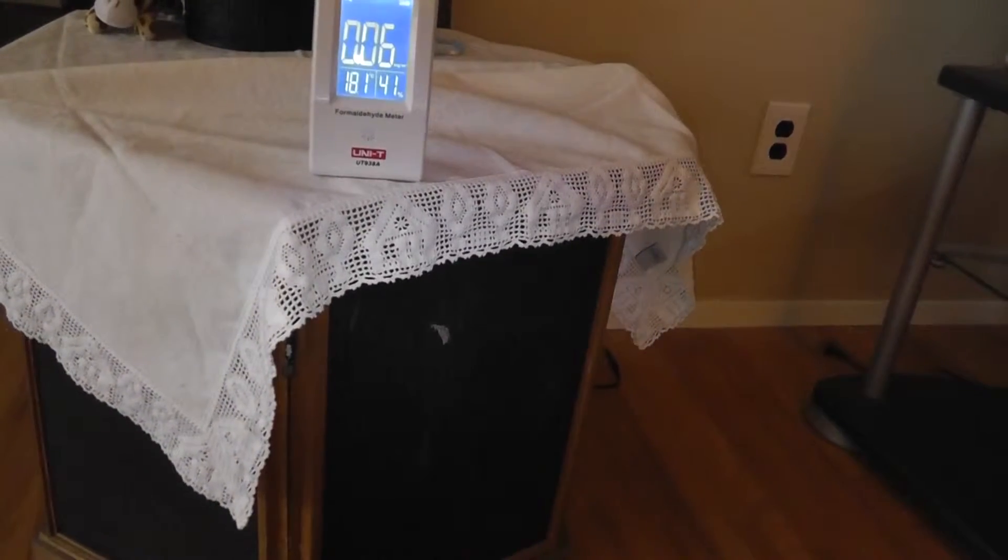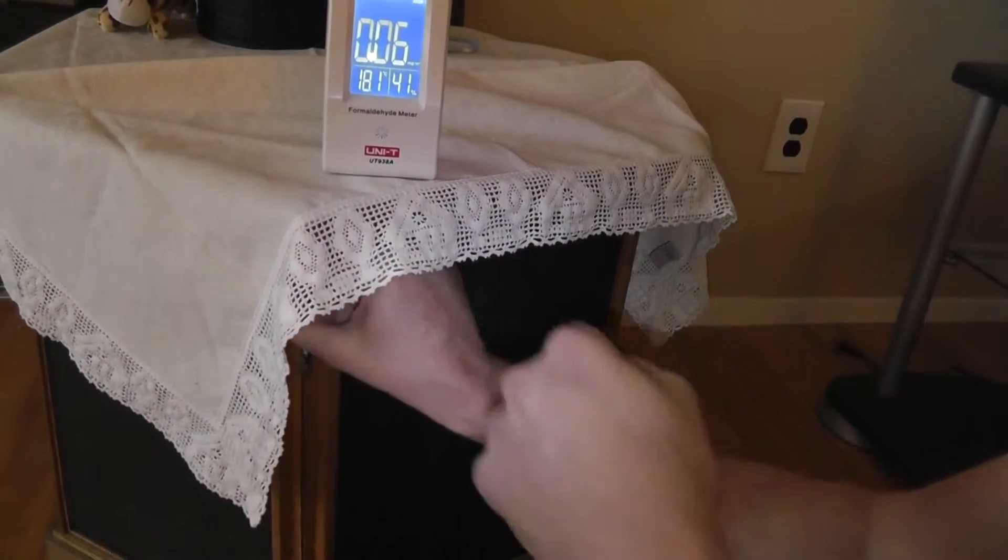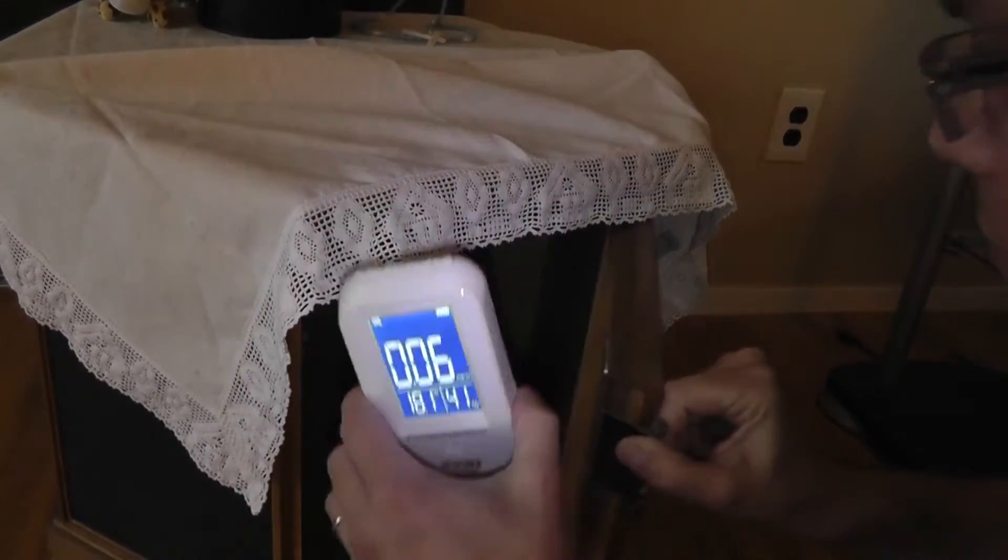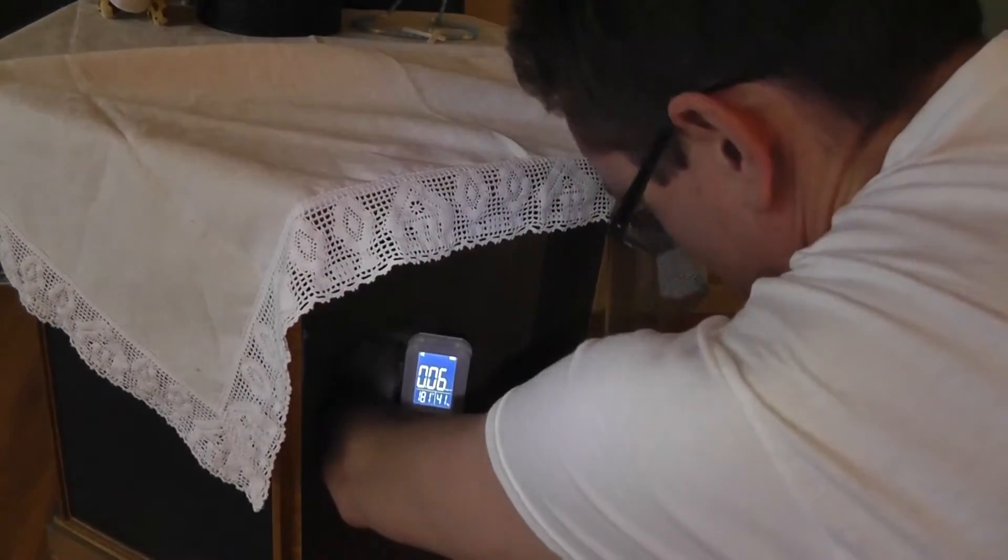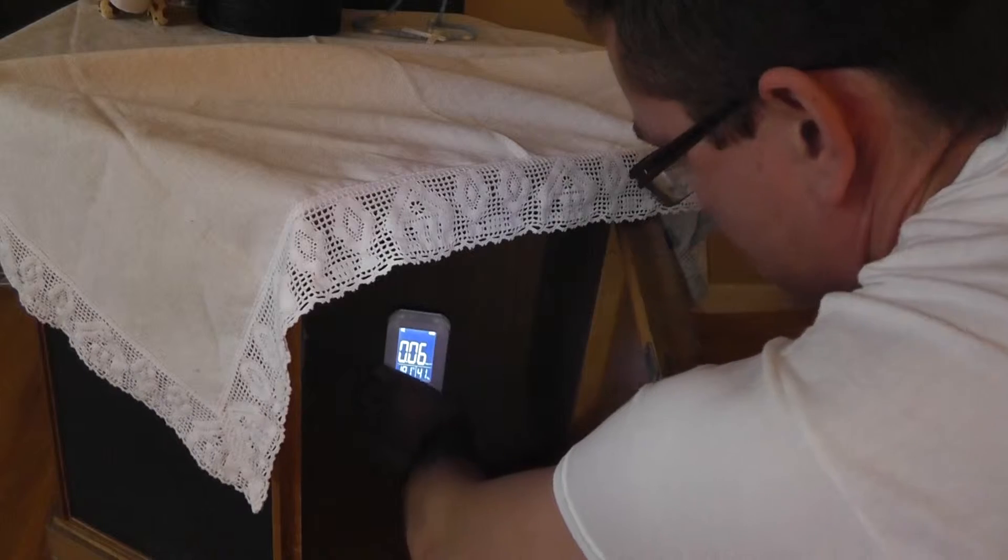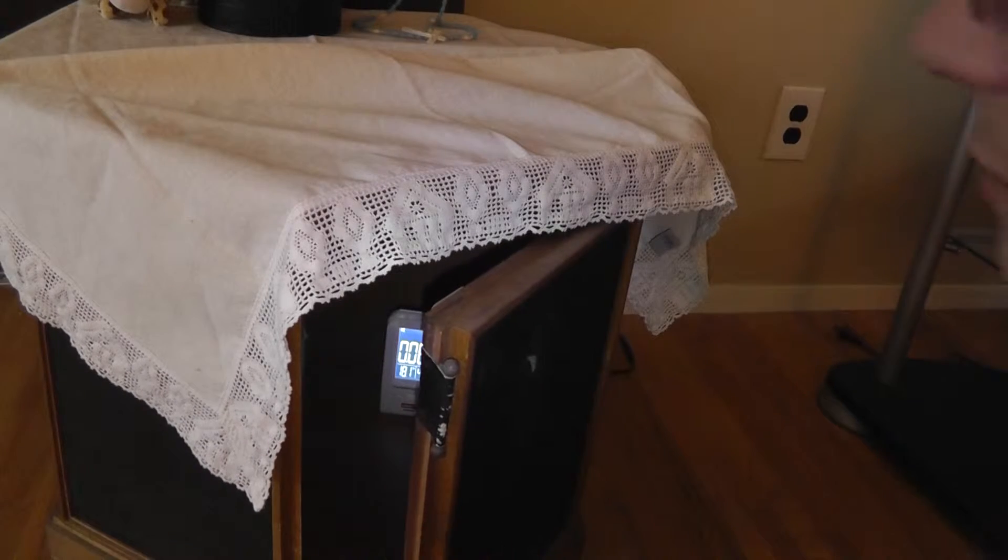Here we can see the device to measure the concentration of formaldehyde in the air. Right now it shows a concentration of 0.06 mg per cubic meter, which is about 35 cubic foot.